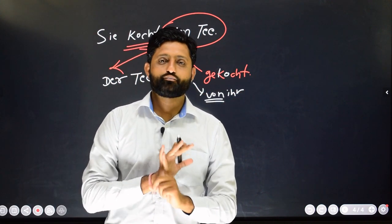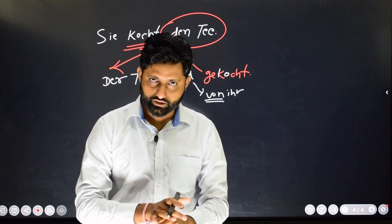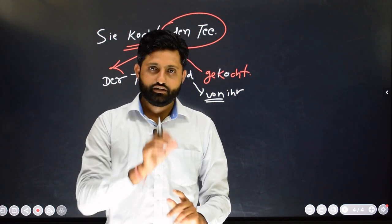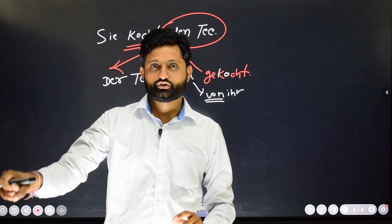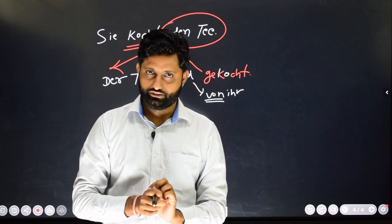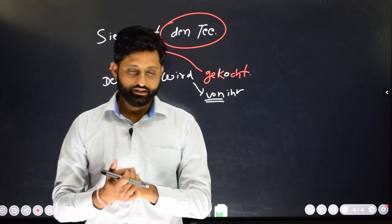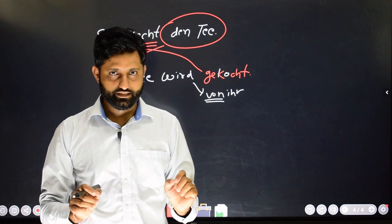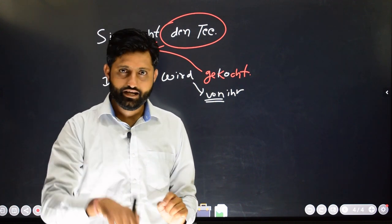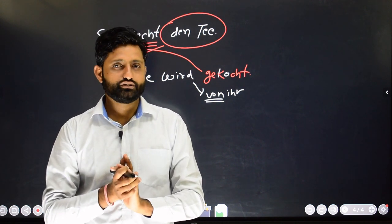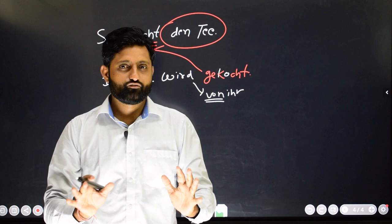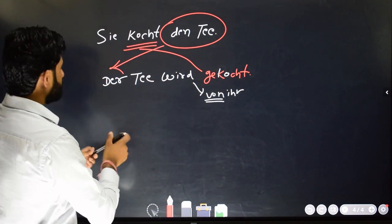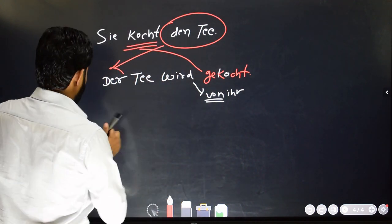So what have we learned? Whenever we have a preposition in an accusative sentence, there will not be any changes to the preposition in the passive voice sentence — rule number one. Rule number two: if we have 'man' in the sentence, then while converting that sentence into passive voice, 'man' will be ignored.